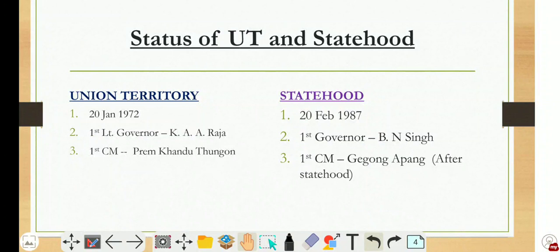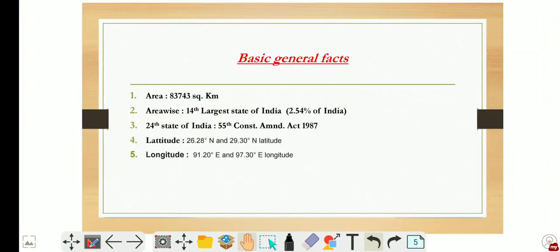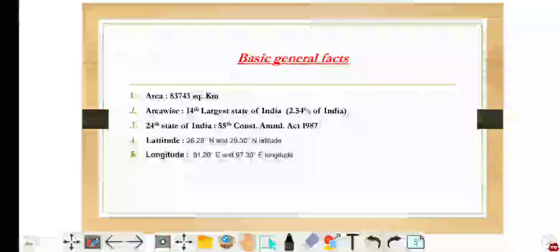Now let's look at some basic general facts of Arunachal. First of all, area. The area is 83,743 square kilometers. Area-wise, it is the 14th largest state of India, covering 2.54% of India. In some books it may be written as the 15th largest state, but according to the latest update it is the 14th largest. It is the 24th state of India and we got statehood on 20th February 1987 by the 55th Constitutional Amendment Act, 1987.